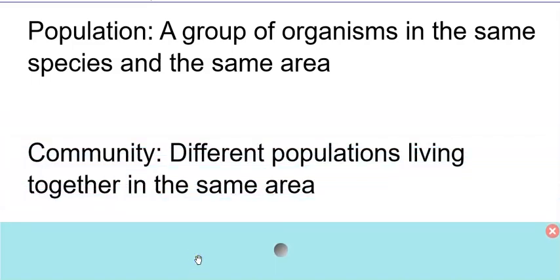Now community is going to be one step bigger. This is putting some different populations together. So our community of Worthington, we have a population of humans, but we also have squirrels, and dogs, and mosquitoes, and geese. So that would be our community. So different populations, different kinds of animals, but we all live in the same area.